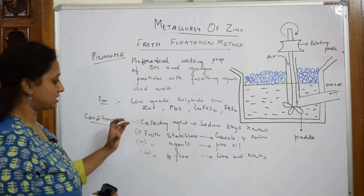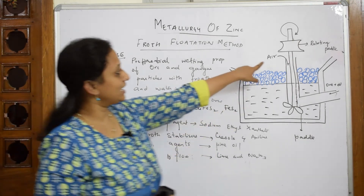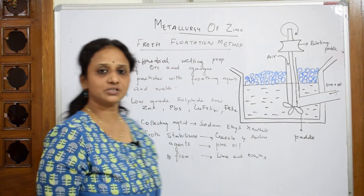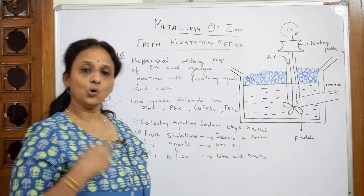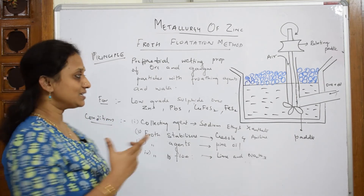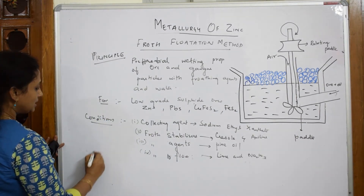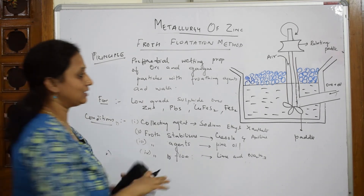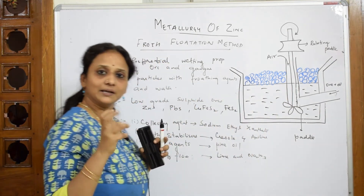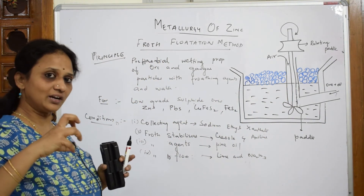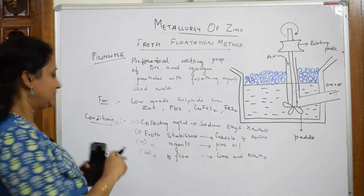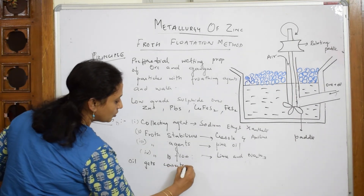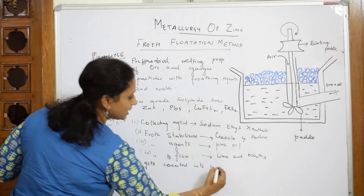Once all four agents are added into the container, high-pressure air is circulated and the paddle rotates continuously. Ore and oil are introduced. When everything is rotated continuously, the whole mixing occurs in the tank. Once it is mixed, in the second step, oil starts converting into colloidal particles — the oil forms a colloid. Colloid is an aggregation of molecules, and the oil gets converted into colloid when air pressure is supplied.